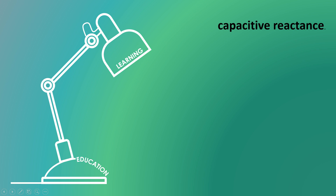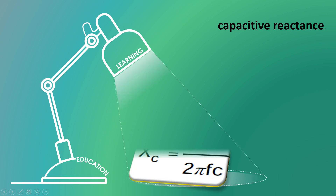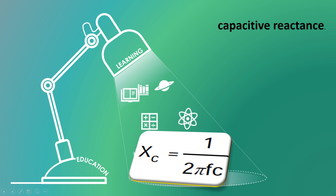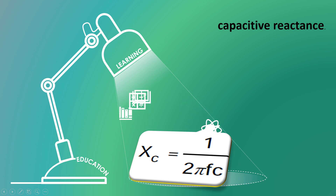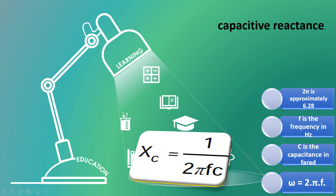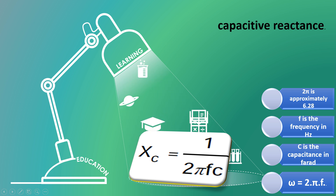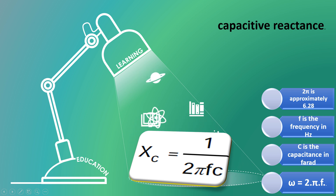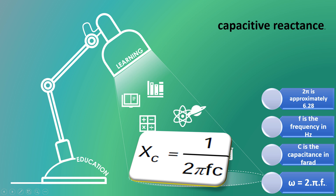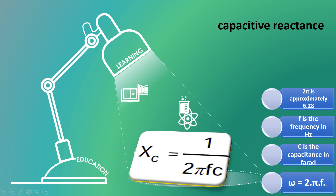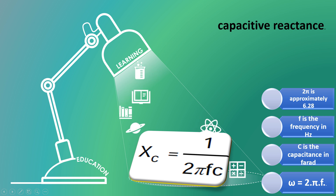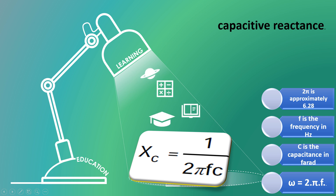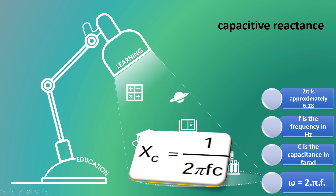Capacitive reactance — how to find capacitive reactance. The formula is XC equals to 1 divided by 2 pi FC, where 2 pi is approximately 6.28, F means frequency in hertz, C is the capacitance in farads. W equals to 2 pi F, so in place of 2 pi F, the formula is XC equals to 1 divided by WC, because W means angular frequency equals to 2 pi F.